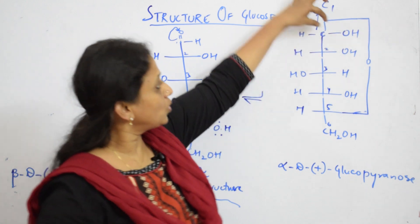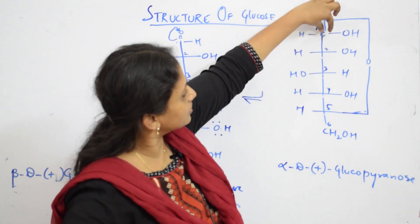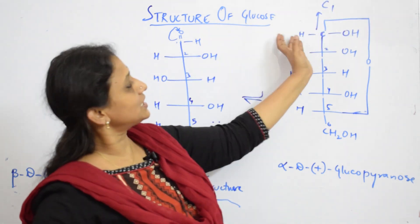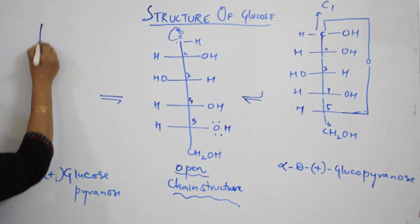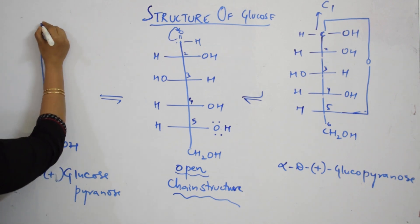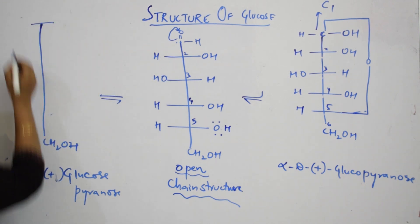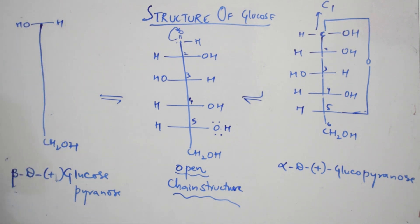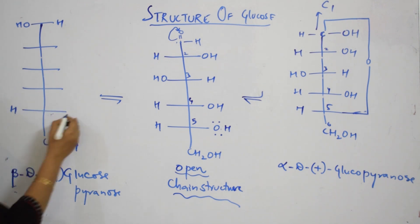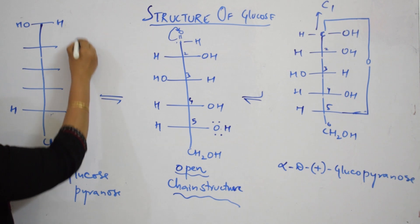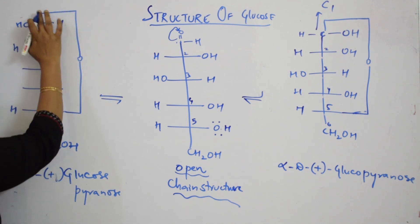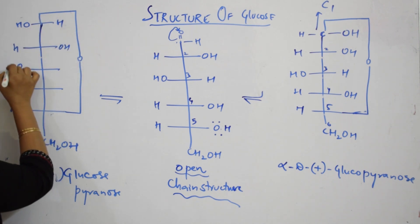For beta, hold this carbon and rotate it — OH comes to one side and H goes to the other side. So in beta-D-glucose, OH is here and H is here. The oxygen forms a ring with the first carbon; remaining substituents are all the same. This gives us carbon one, two, three, four, five, with CH2OH at carbon six.